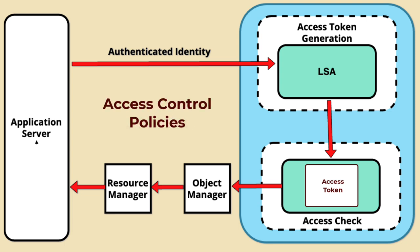Second, Access Control Policies: the SRM enforces access control policies based on the identity of subjects — users or processes — and the permissions defined in the access control list (ACL) associated with the object. The ACL specifies the permissions granted or denied to different users and groups.